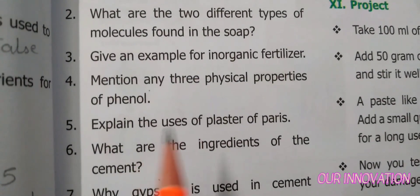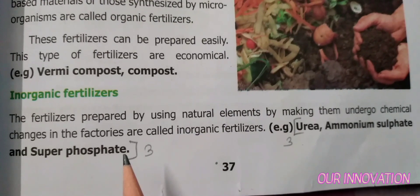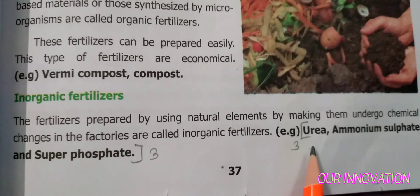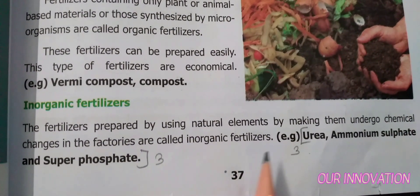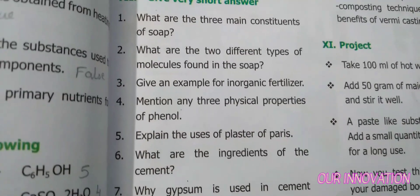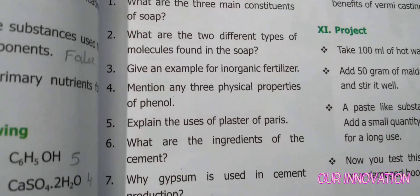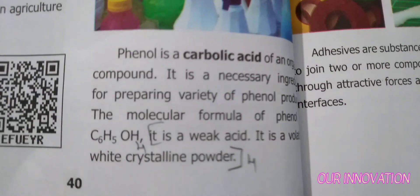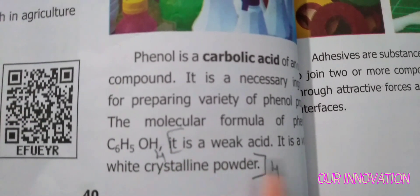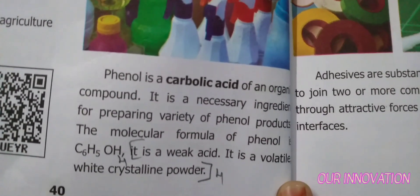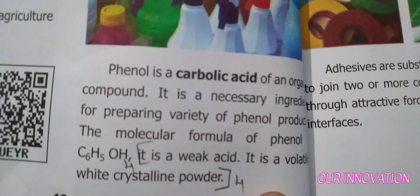Question: Give an example of inorganic fertilizer. Answer (page 37, under the heading inorganic fertilizer): Urea, ammonium sulfate, and superphosphate are examples of inorganic fertilizer. Question: Mention any three physical properties of phenol. Answer (page 40): Phenol is a weak acid. It is a volatile, white, crystalline powder.